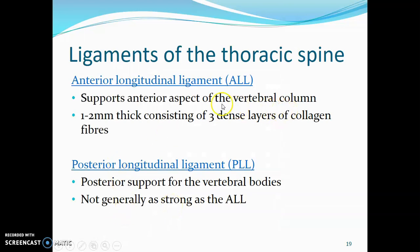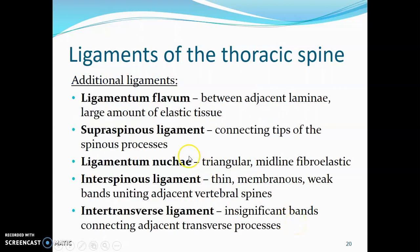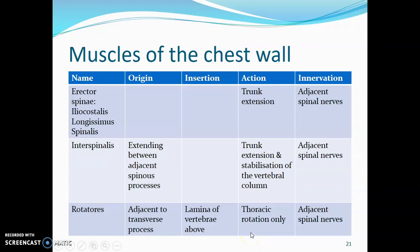The ligaments of the thoracic spine include the anterior longitudinal ligament on the anterior aspect of the vertebral column, consisting of three dense layers of collagen. The posterior longitudinal ligament is on the posterior part of the vertebral body but is not as strong as the anterior. Other ligaments include the ligamentum flavum connecting adjacent laminae, the supraspinous ligament connecting the tips of the spinous processes, the ligamentum nuchae — a fibroelastic supraspinous ligament in the cervical region — and the interspinous ligaments, which are weak bands between adjacent spinous processes. Finally, intertransverse ligaments connect adjacent transverse processes.